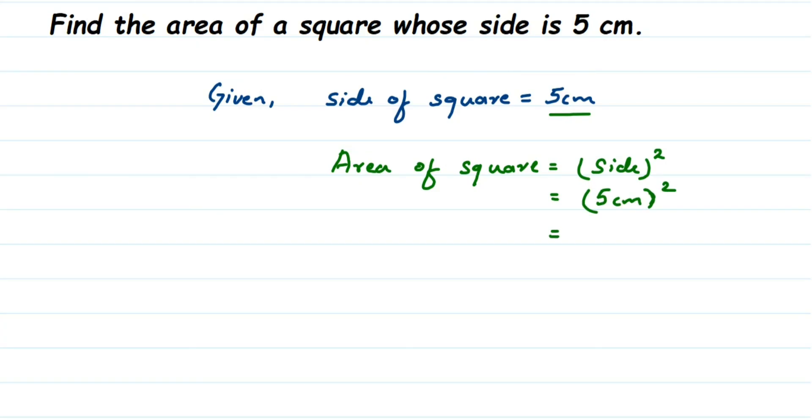So 5 into 5, 5 square means you are multiplying 5 two times. It will be 5 multiplied by 5 because power is 2 which means you are multiplying 5 two times.